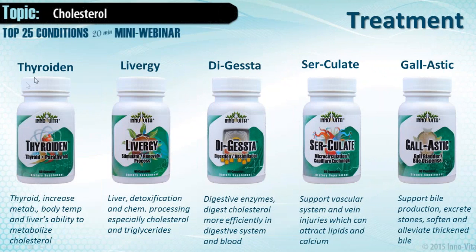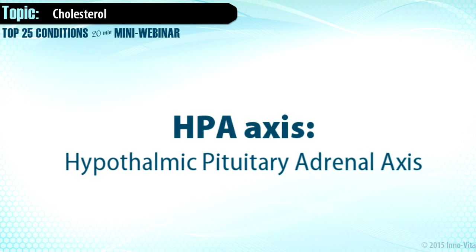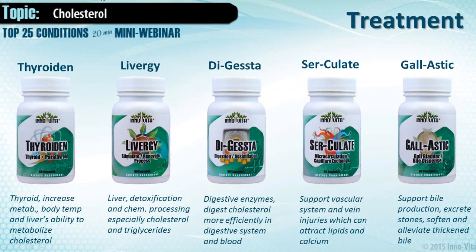For treatment, we want to think about Thyroidin to support the thermostat and raise the body's metabolism, going above the thyroid as well to the hypothalamic-pituitary-adrenal axis. Liver G is going to support liver function, metabolism, synthesis, and digestion. Digesta helps very well — take it on an empty stomach as well as with your food. It contains lipase, protease, and amylase from plant enzymes. Everything Inovita uses is completely vegan — even the capsules are not gelatin but carbohydrate-based.